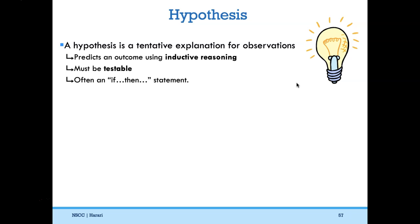A hypothesis is a tentative explanation for observations. It must predict an outcome using inductive reasoning — when you make observations about two different things and inquire about the relationship between them, combining isolated facts into a cohesive whole. So seeing kids eating chocolate and having bad acne, I use inductive reasoning: maybe something's behind this chocolate consumption — maybe eating too much chocolate might cause bad skin. Our hypothesis: if teenagers consume chocolate, then they will be more likely to develop acne. This hypothesis is testable because I could design an experiment to see if chocolate consumption leads to bad skin.